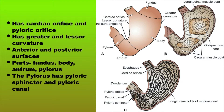It has a cardiac orifice on top and a pyloric orifice at the bottom. It has a greater curvature which is the left border and a lesser curvature which is the right border. It has anterior and posterior surfaces.